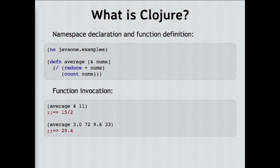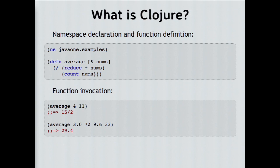This here is a whirlwind introduction to Clojure syntax. Every expression is wrapped in parentheses, like any Lisp. This little example starts with a namespace declaration — ns — saying we're in the namespace java1.examples, and then it has one function definition. Defn defines a function, average is the name of the function, and nums is the argument, with the ampersand meaning it takes any number of arguments, so it has variadic arguments.